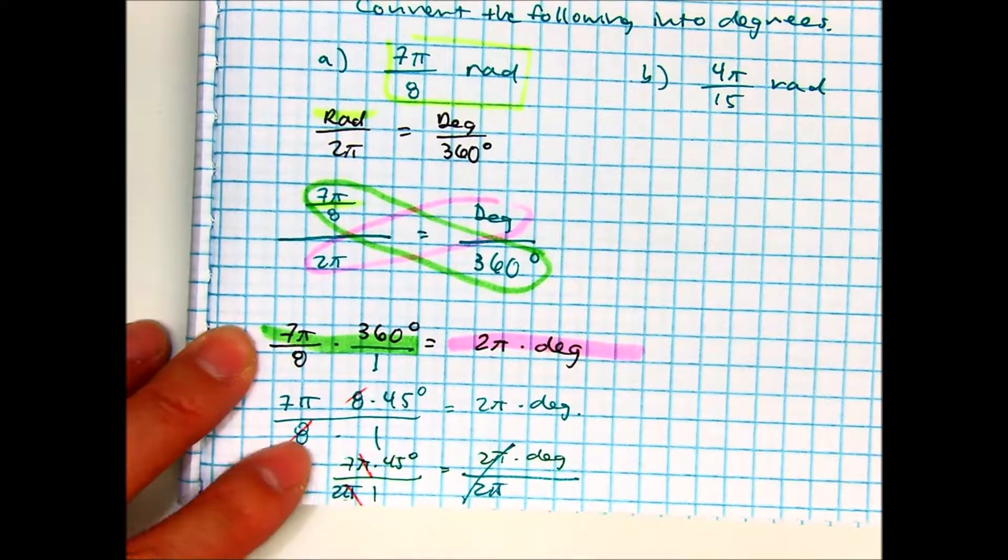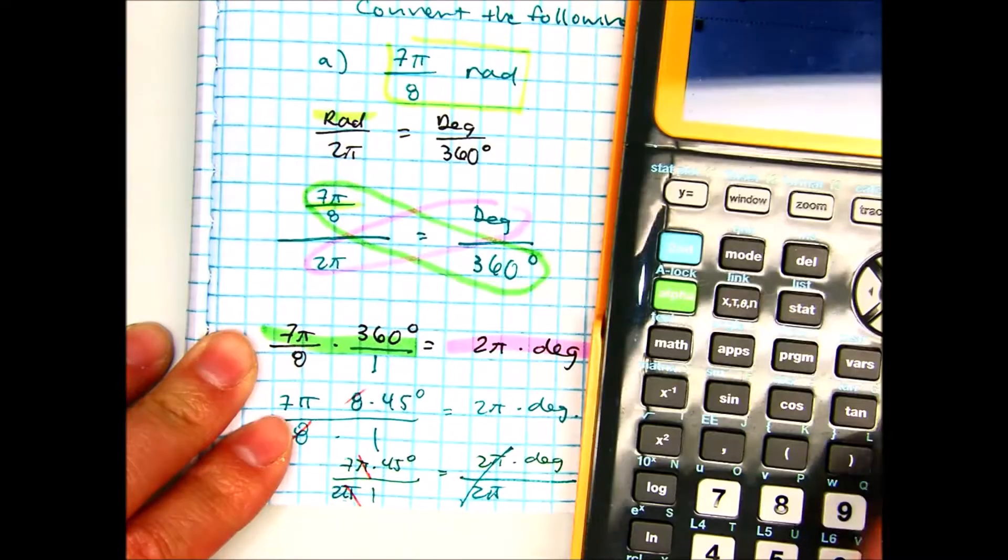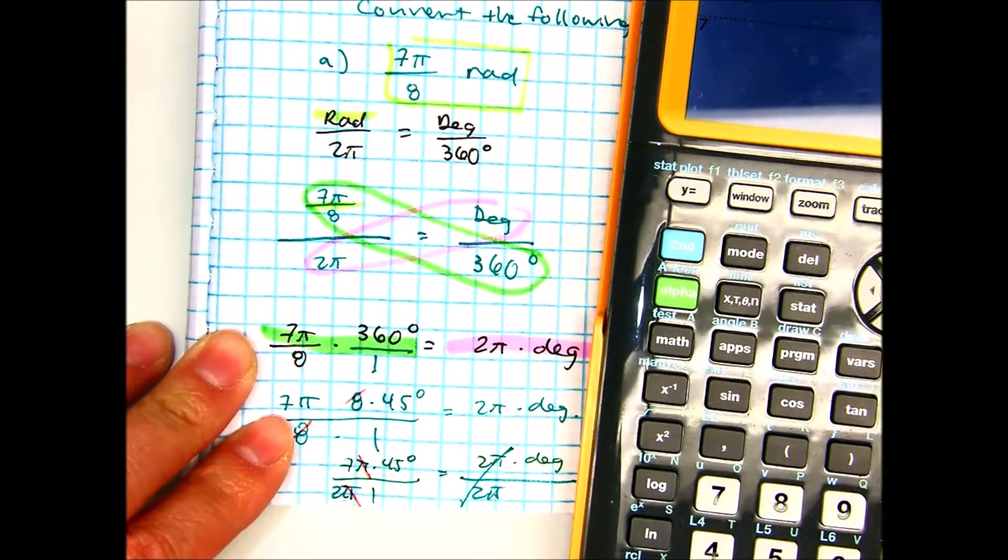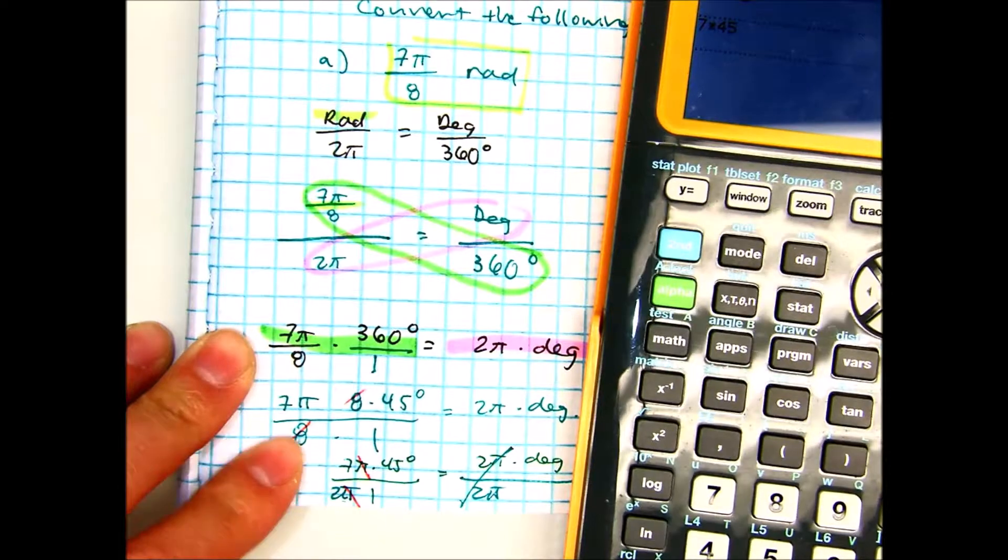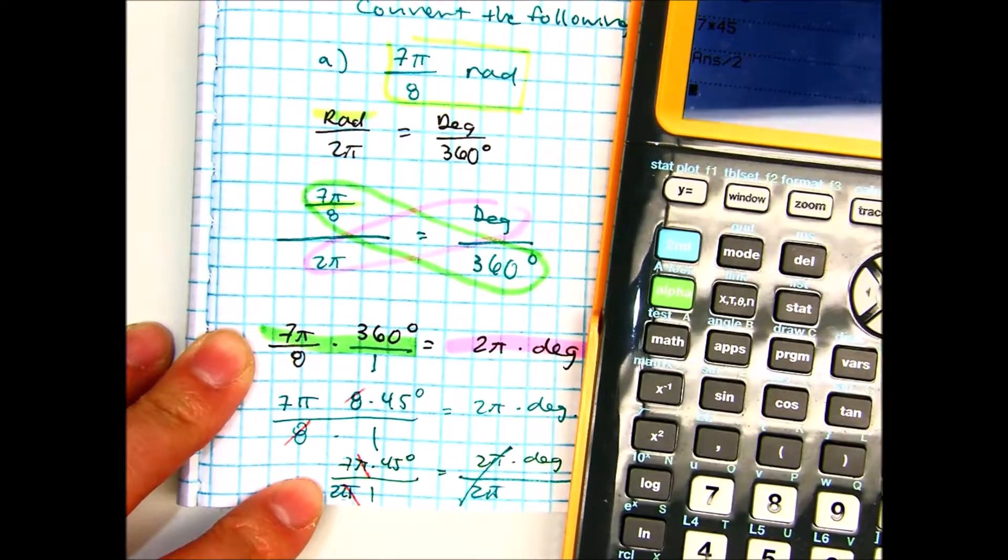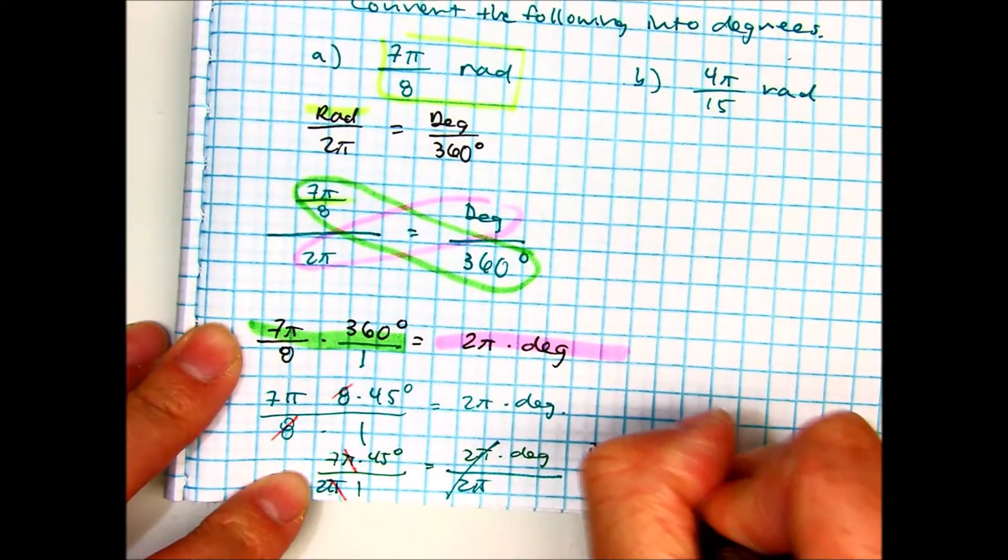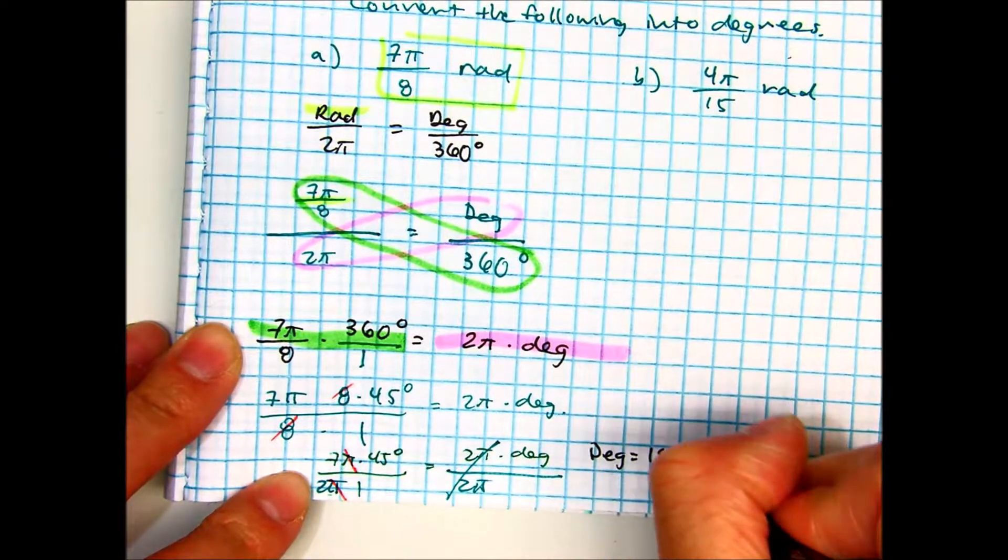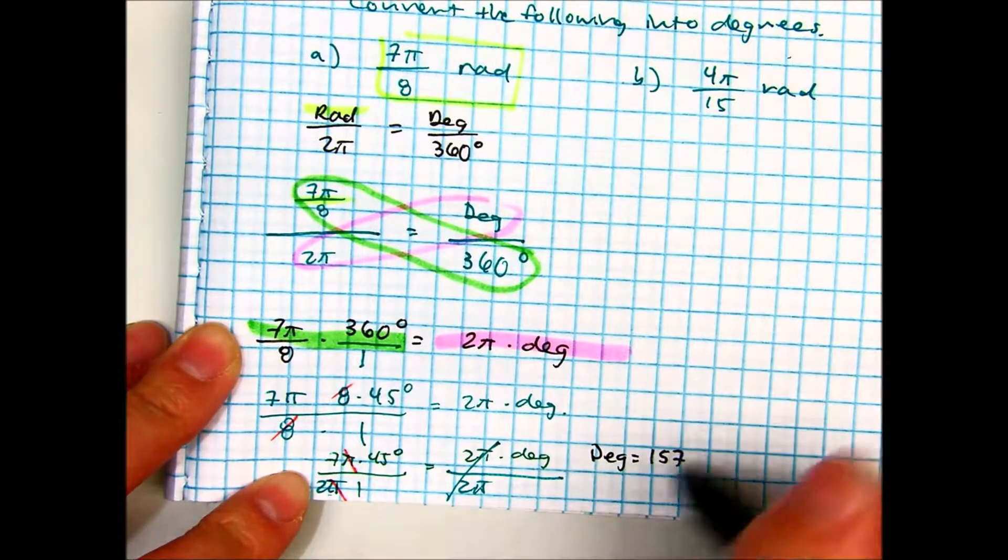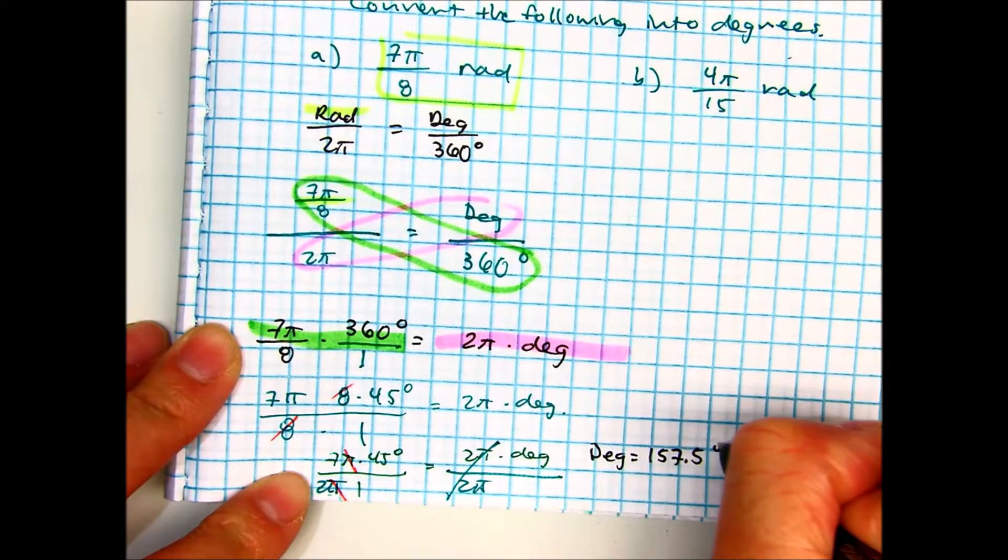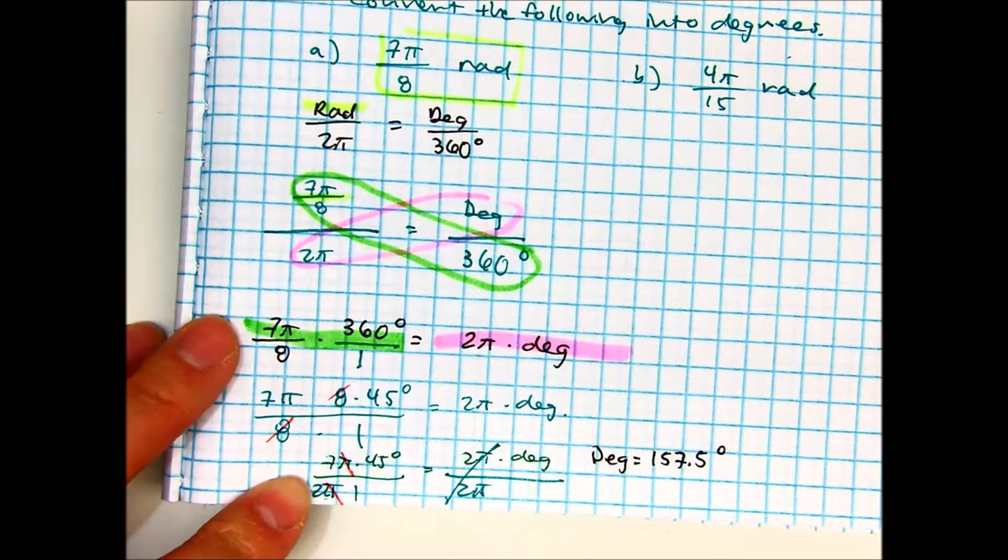And you can just put this into your calculator, 7 times 45. And then divide my answer by 2. Degrees equals 157.5 degrees. Raise your hand if you got that.